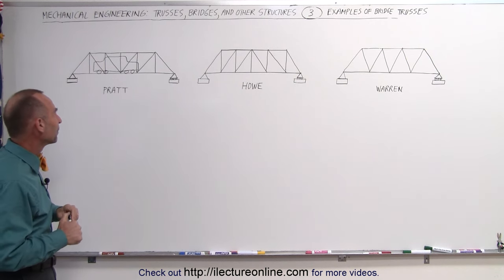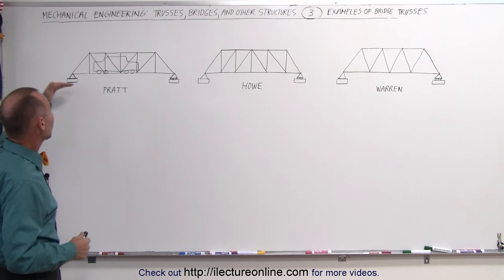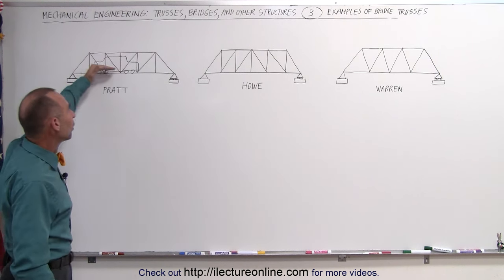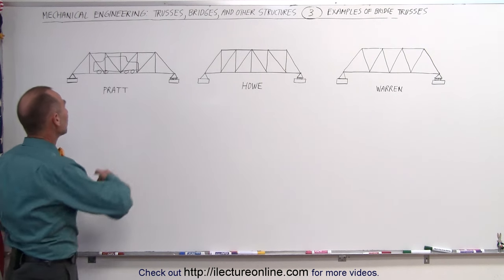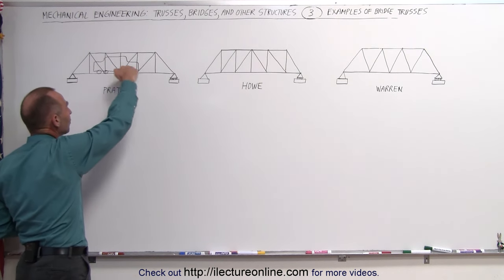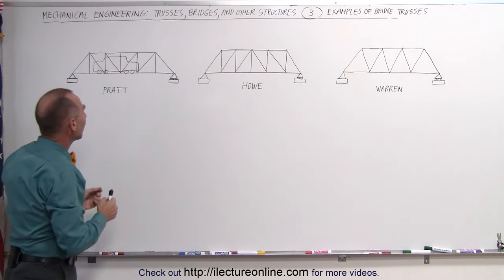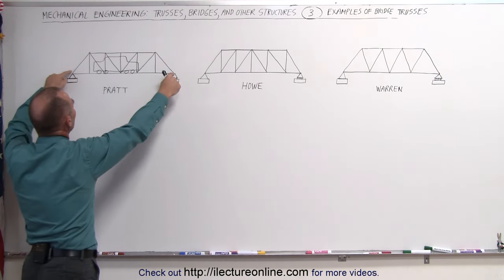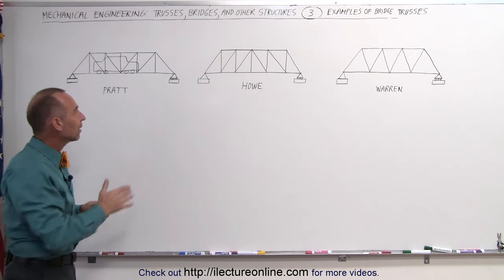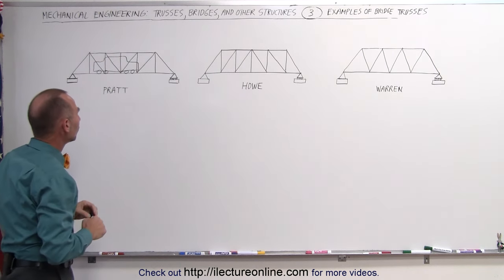The whole idea with bridge trusses is that you're supposed to be able to hold very heavy loads. Let's say a big locomotive tries to cross the bridge here. There's going to be a lot of weight pushing down on these bottom members, and somehow you need to support that weight and carry that force out to the supports on the very edge. That's done through the structure of beams and joints.